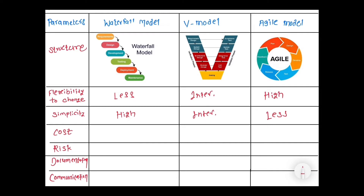The fourth parameter is cost. In the waterfall model, the work is very simple, so the cost to implement the waterfall model is very less. In V model, the documentation part is there, so the cost is intermediate compared to both models. Whereas in agile, the model requires a particular framework for implementation like the Scrum framework, that's why agile is a very costly model compared to the other two.